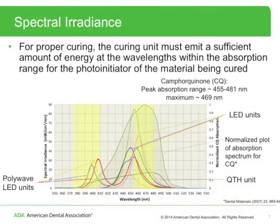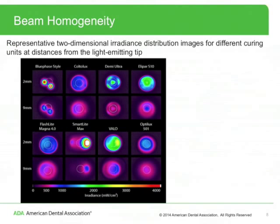In the figure, the poly-wave LED units have a peak centered at around 398 to 408 nanometers. These curing units are designed to work with photo initiators other than camphorquinone. There is a yellow shaded region from about 375 to 410 nanometers that approximately represents the absorption range for the photo initiator Lucirin TPO.